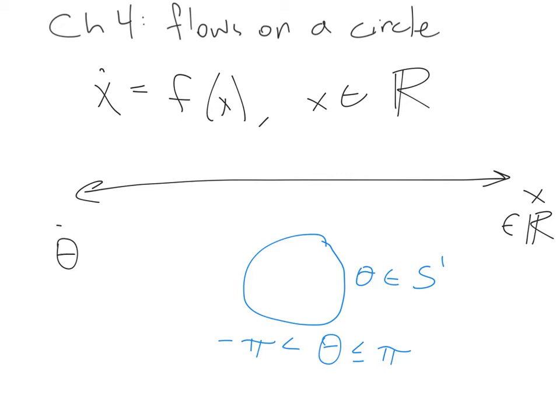So if we have an equation theta dot equals g of theta, we're going to need this equation to be single-valued along this circle, and that means it's going to have to be a periodic function with a period of 2 pi.